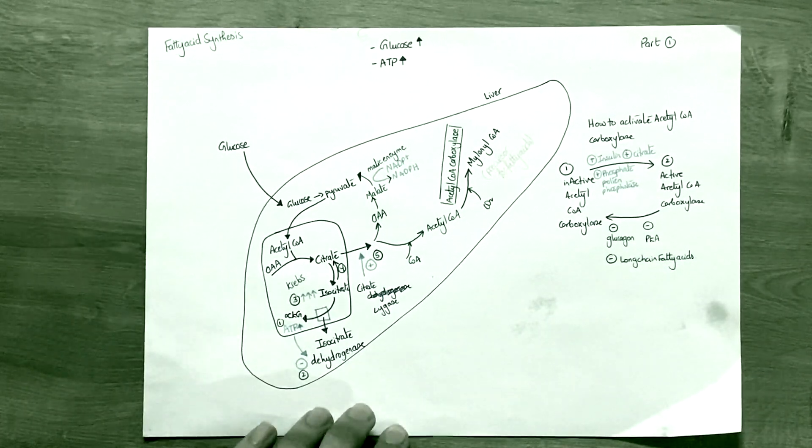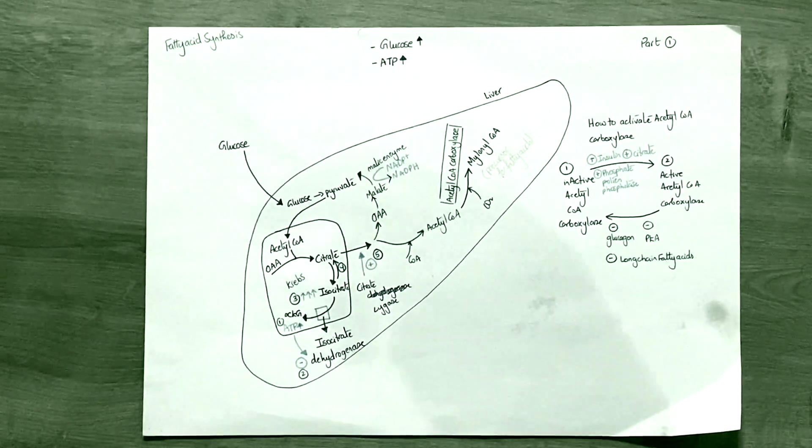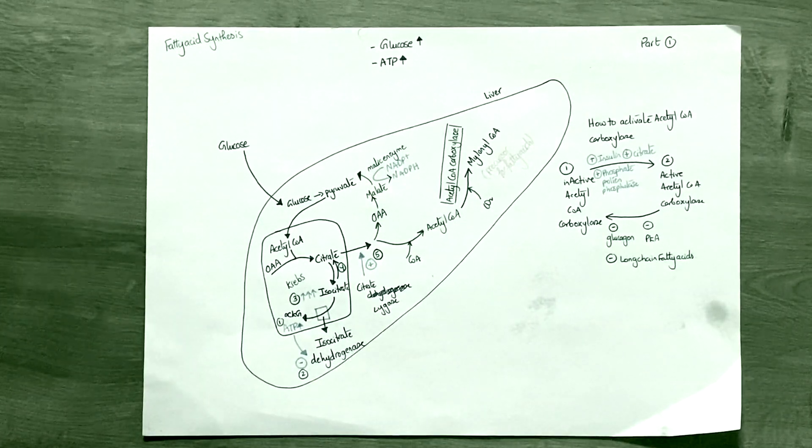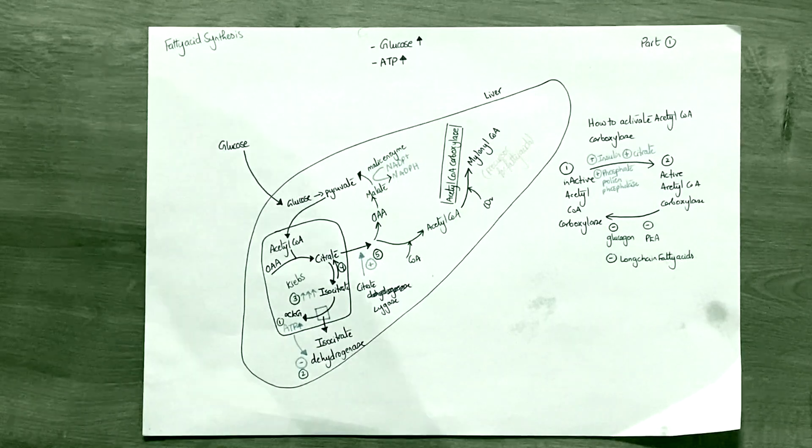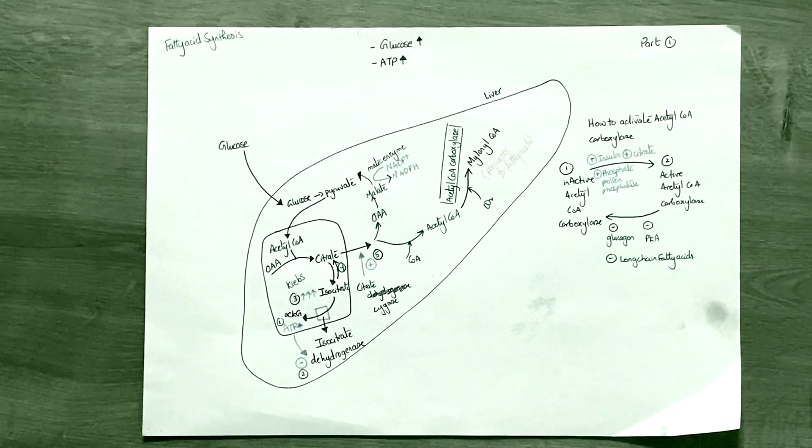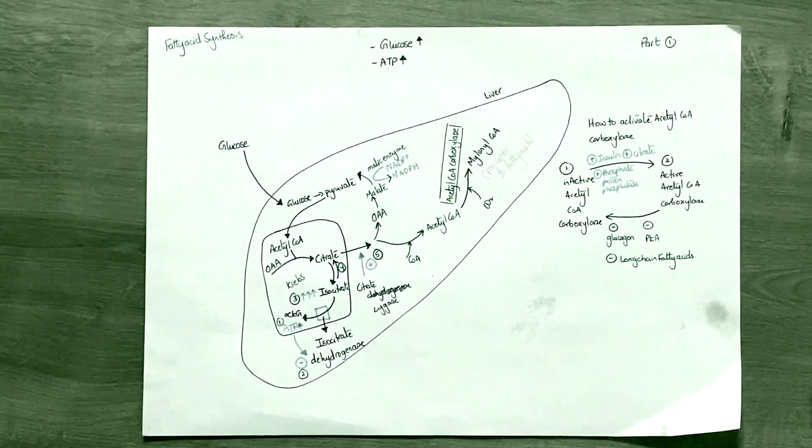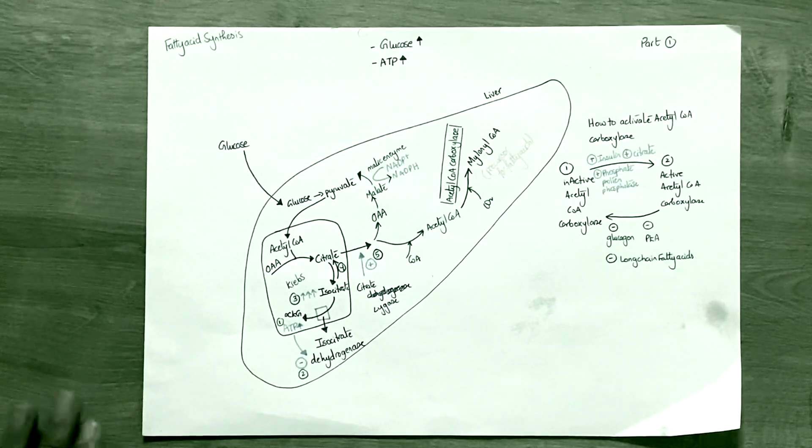For fatty acid synthesis, what we need to know is that when we eat a very sugary meal or our body has a lot of glucose going on in the blood system, ATP would be produced in a large amount. If ATP is produced in a large amount, then the body would want to convert this glucose source into a fatty acid source so that it can be stored.